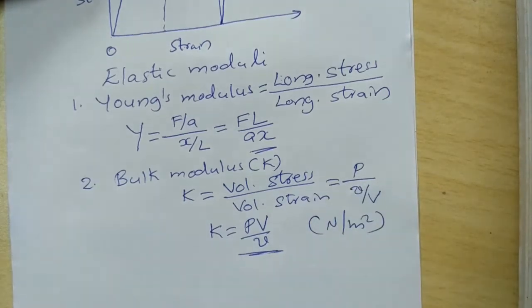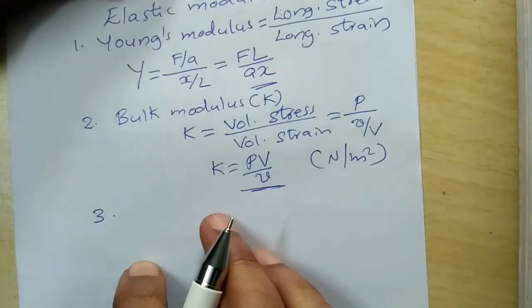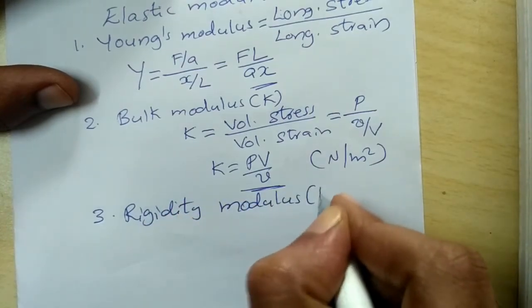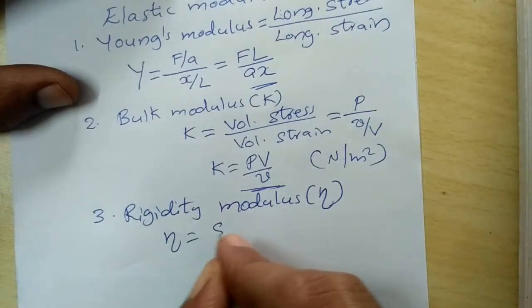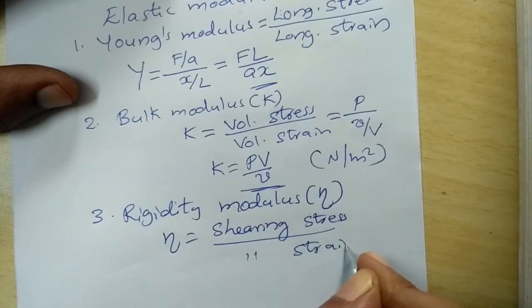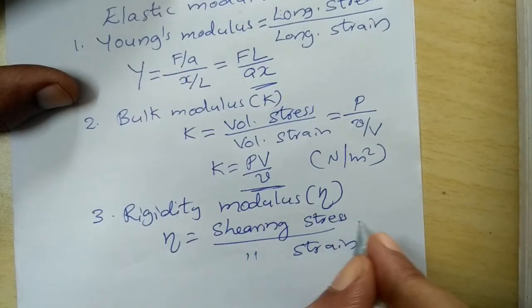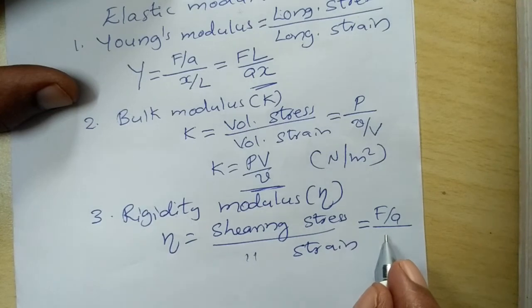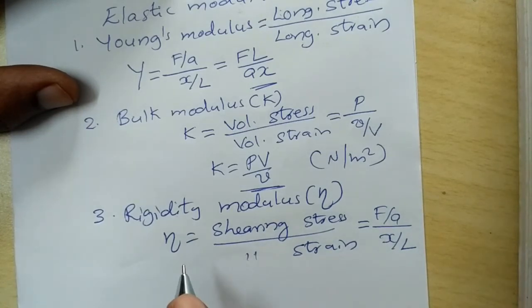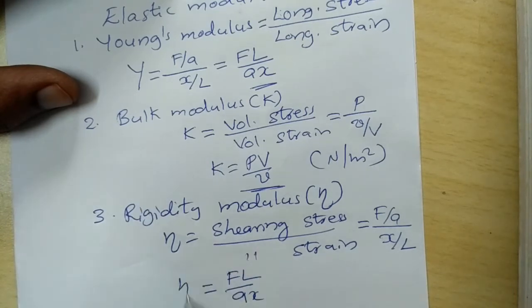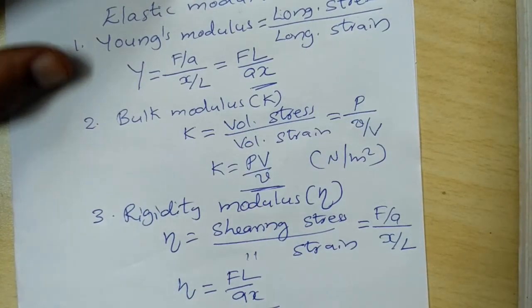The third elastic modulus is the rigidity modulus, denoted by η. It is the ratio of shearing (tangential) stress to shearing strain. Shearing stress is force per unit area, and shearing strain is given by θ = x/L. The expression for rigidity modulus is therefore η = FL / Ax, which has the same form as Young's modulus.